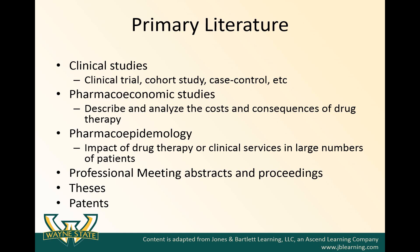Primary literature is the foundation on which all other literature sources are built. It is original research that can be published or unpublished work. Using primary literature is often the final step in the search for drug information because it's the most specific type. These might include clinical trials, cohort studies, case controls, pharmacoeconomic studies describing and analyzing costs and consequences of drug therapy, pharmacoepidemiology looking at the impact of a drug therapy or clinical service on a large number of patients, professional meeting abstracts or proceedings, theses, and patents. The advantage includes obtaining complete, detailed, and most relevant information, allowing the researcher to independently evaluate it. The disadvantage is that it requires a comprehensive search to obtain truly relevant research findings translatable to patient care.